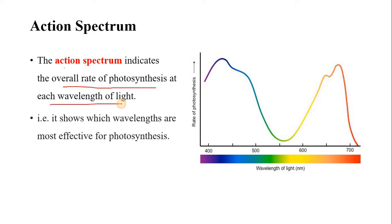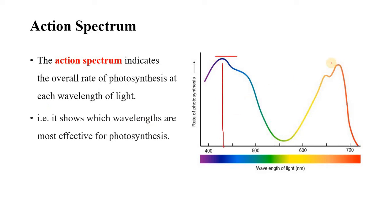Now, what is action spectrum? Action spectrum indicates the overall rate of photosynthesis at each wavelength. Among the absorbed lights, the action spectrum indicates which wavelengths drive photosynthesis most rapidly. It shows which wavelengths are most effective for photosynthesis. As you can see in the graph, blue light has a higher rate of photosynthesis, and red light also has a high action spectrum — meaning photosynthesis rate is faster in red light. In orange or yellow light the rate of photosynthesis is slower, and green light, which is completely reflected, shows no photosynthesis. So green light is the least important light for photosynthesis.